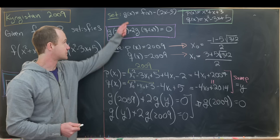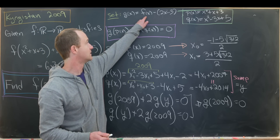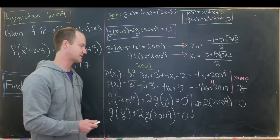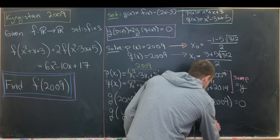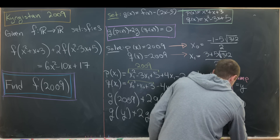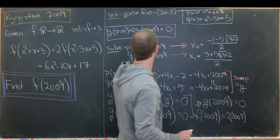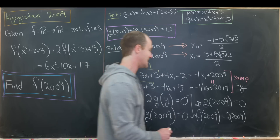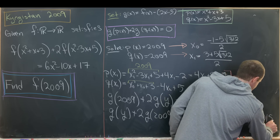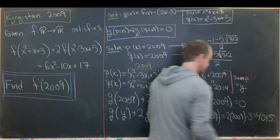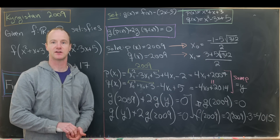Recalling that g(x) = f(x) - 2(x - 3), and g(2009) = 0, that means f(2009) = 2·2009 - 3 = 4014. So our final answer is 4014, and that's a good place to stop.